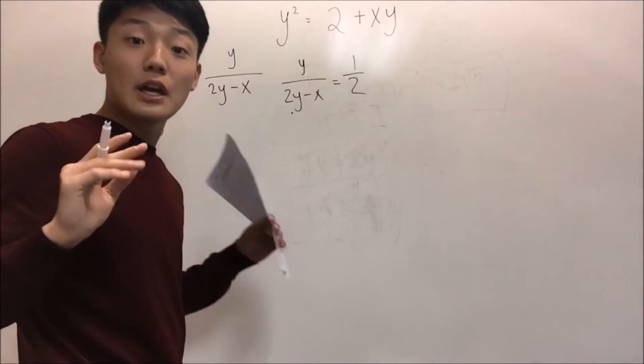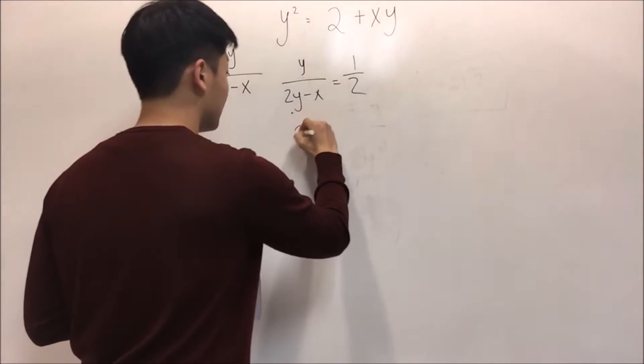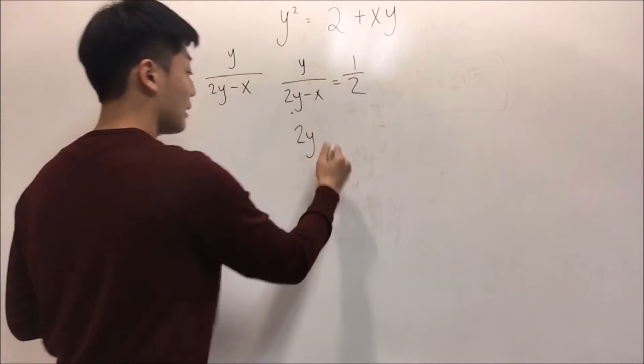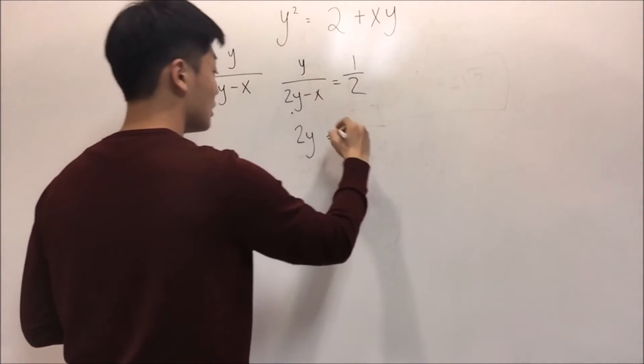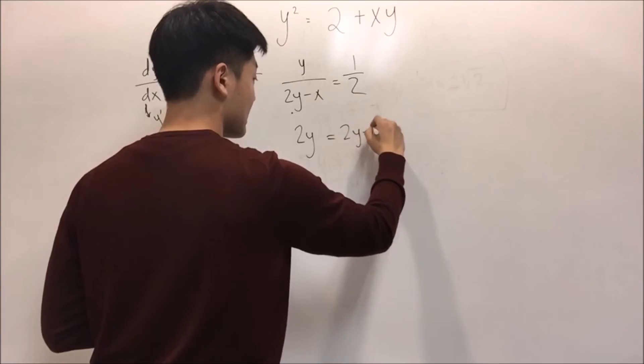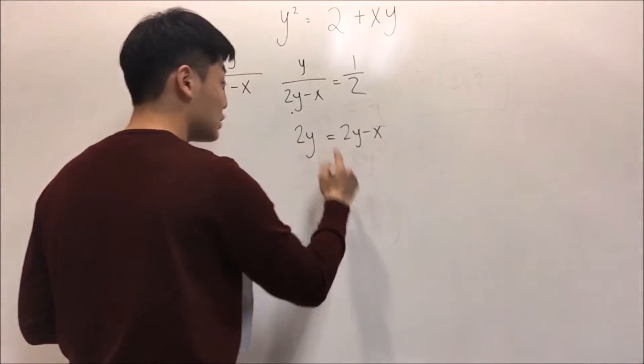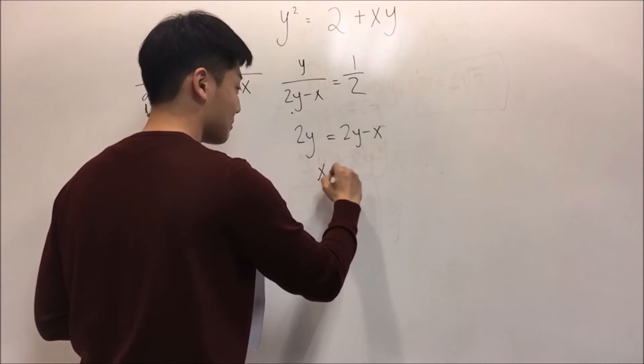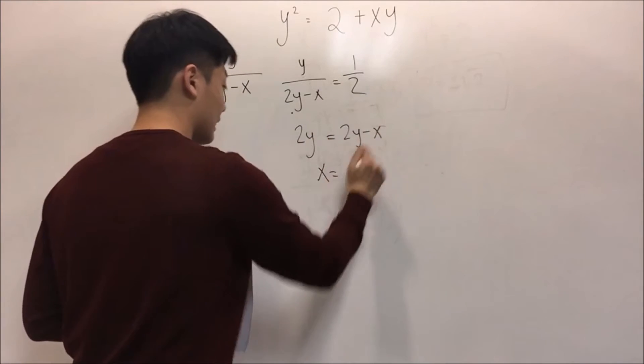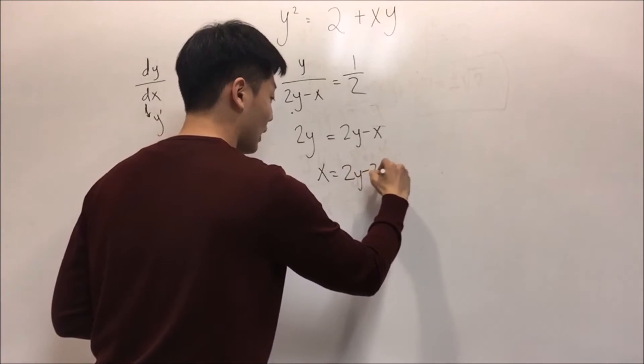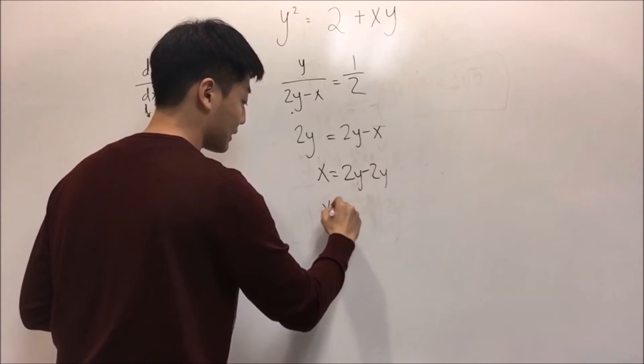When we use cross multiplication, it will become 2y equals 2y minus x. When I move x to this side and y to this side, 2y minus 2y, it will become x. And now it's obvious, x equals zero.